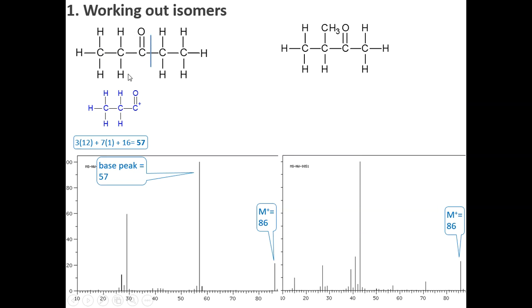We could also break it on this side and get that acylium ion, which is exactly the same. And that's why it is so tall. I've got two fragments contributing to this peak over here. And I have lost an ethyl of 29 in each case. So if I subtract 57 from 86, you can see I've lost 29.